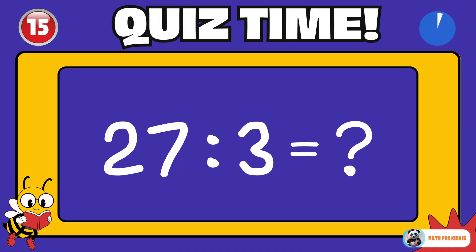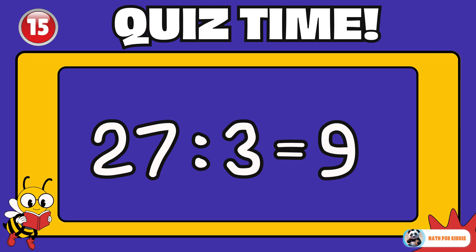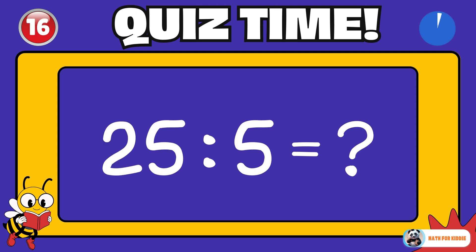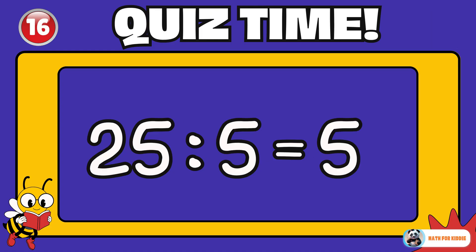Let's see your answer. 27 divided by 3 is equal to? 9. 25 divided by 5 is equal to? 5. Fantastic work!